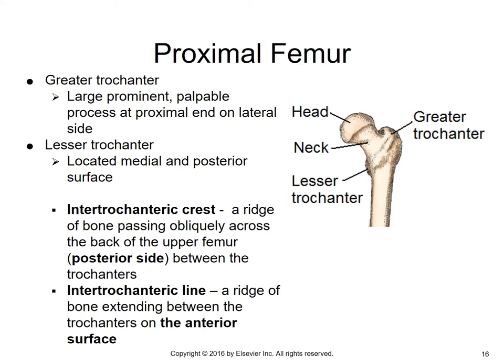On the proximal femur, you've got two trochanters: the very palpable greater trochanter on the lateral side, and the lesser trochanter, which you cannot palpate. The greater trochanter is a large, prominent, palpable process at the proximal end on the lateral side. The lesser trochanter is located on the medial and posterior surface and is not palpable.